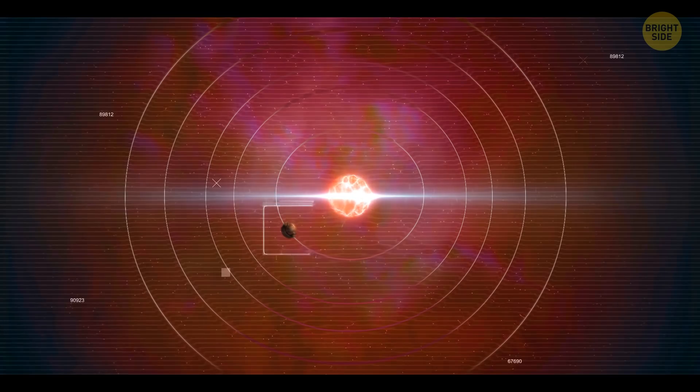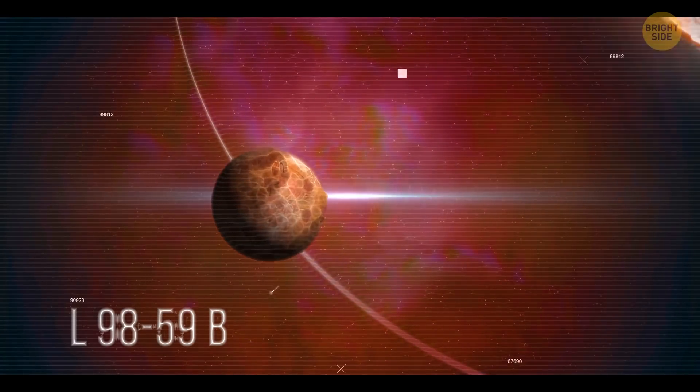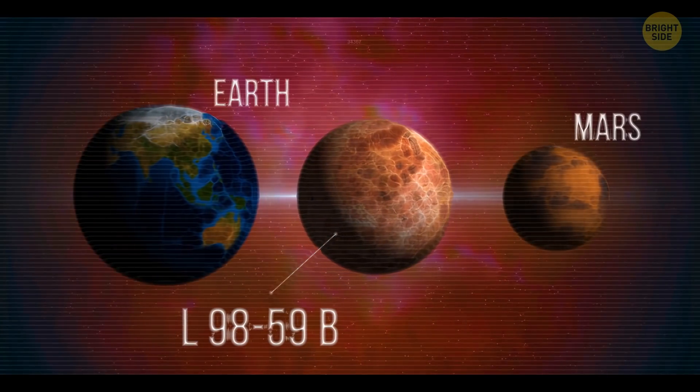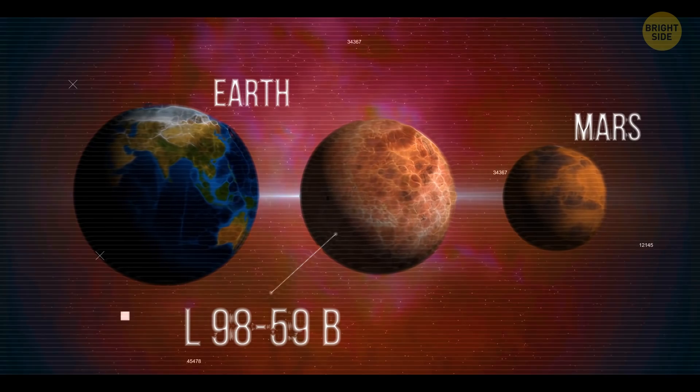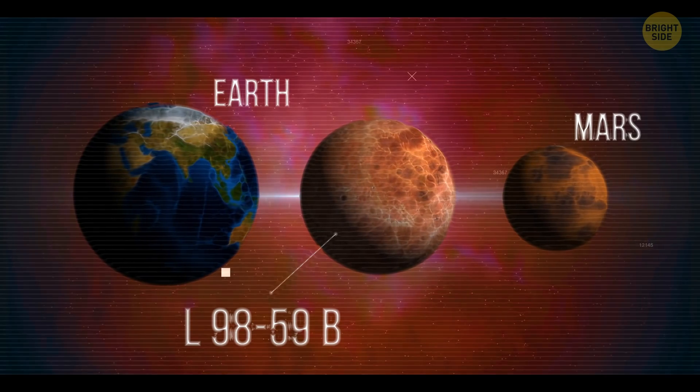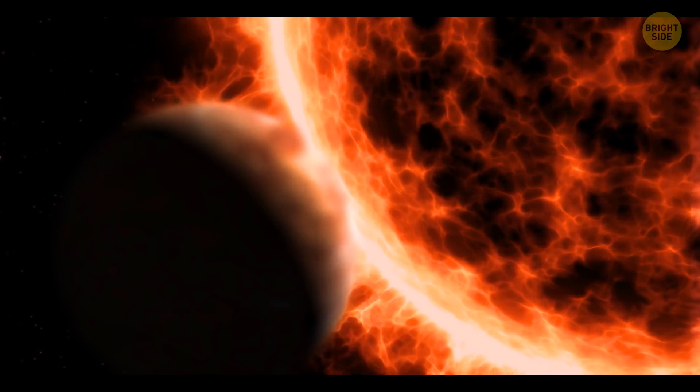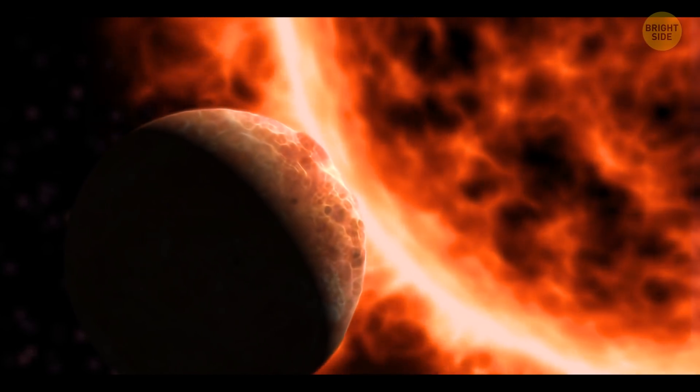But these are the planets orbiting the star that interest us most. The first of these is L9859b. Its size is somewhere between Earth and Mars, but it's very light. It's only half the mass of Venus. But life is impossible on this rocky planet. It's too close to the star, and it's so hot,